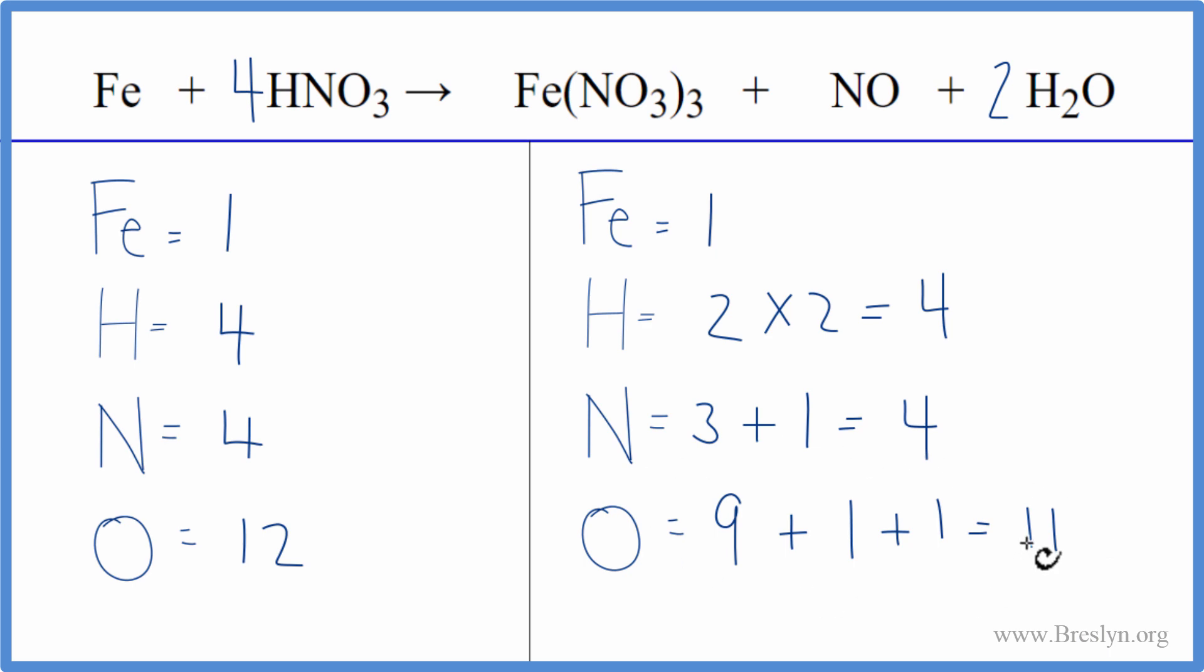Now we need to update the oxygens again. We have three times three, nine oxygens, plus one oxygen, plus one times two. That's two. And nine plus one is ten, plus two, twelve. And this equation is balanced.